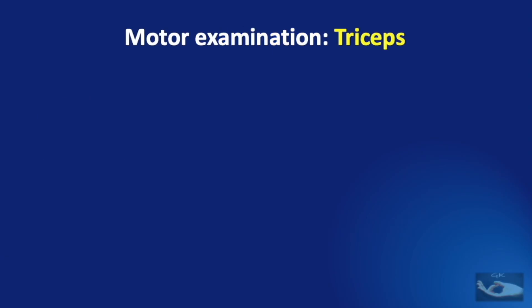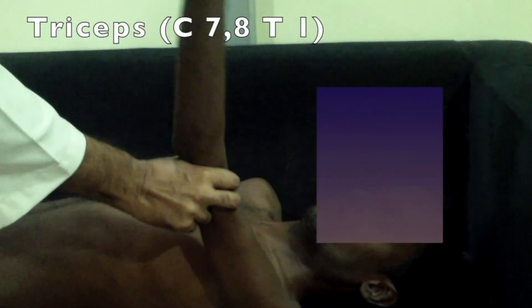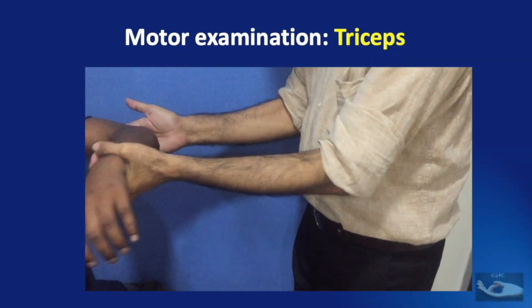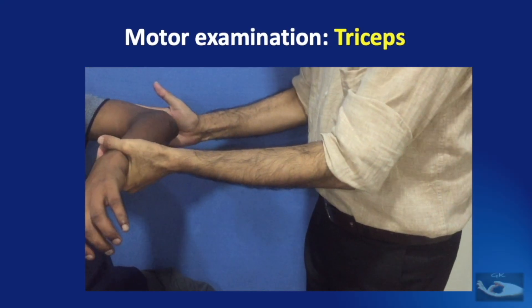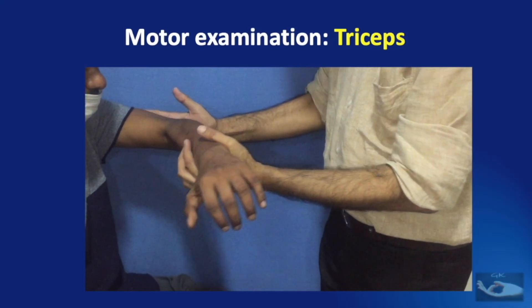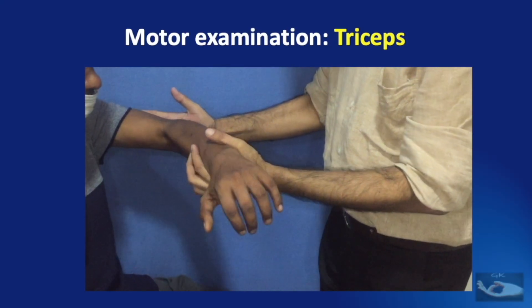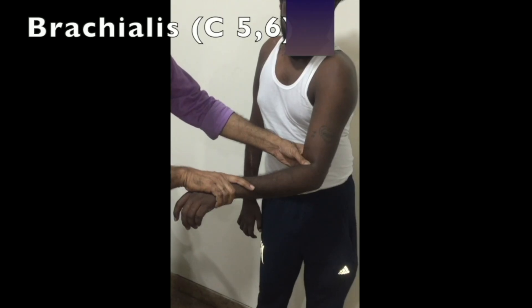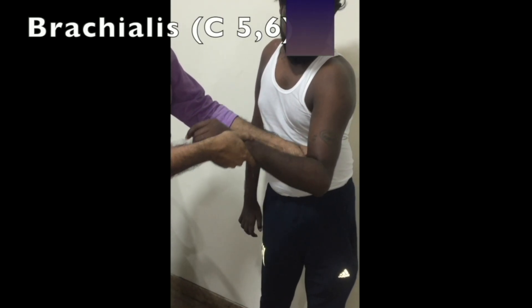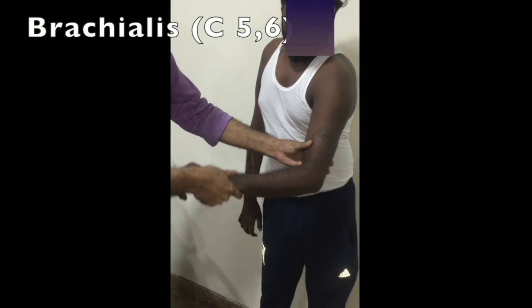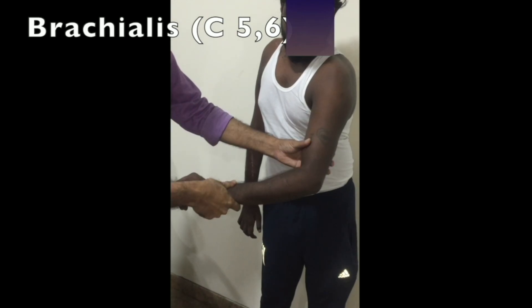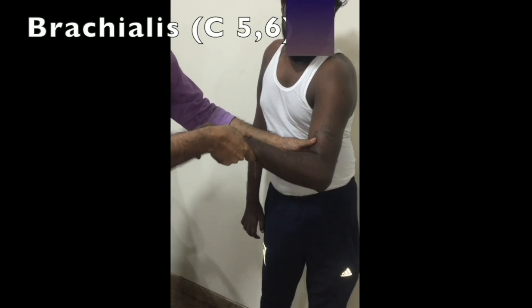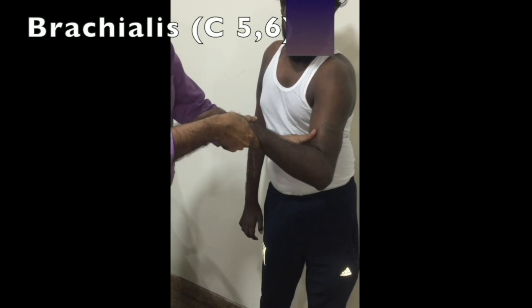In the motor examination, we need to test every single muscle supplied by the radial nerve. When testing the triceps muscle, elbow extension must always be tested against gravity. One hand of the examiner supports the forearm and offers resistance against extension of the elbow, and the other hand supports the elbow joint and palpates the triceps muscle contraction. Testing the brachialis is also simple — elbow flexion is tested with the forearm in total pronated position. The main nerve supplied to the brachialis is the musculocutaneous nerve with root value C5-6, but the radial nerve branch to brachialis has a root value of C7.